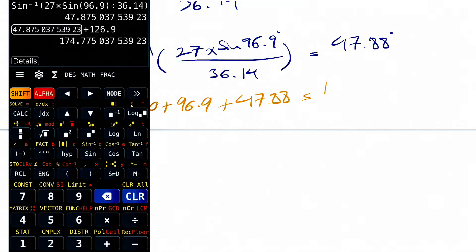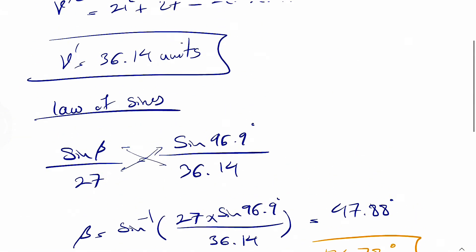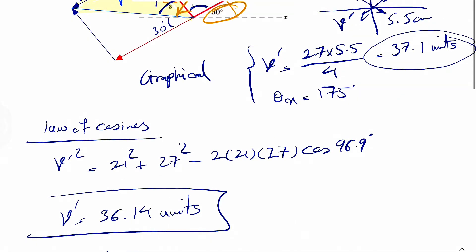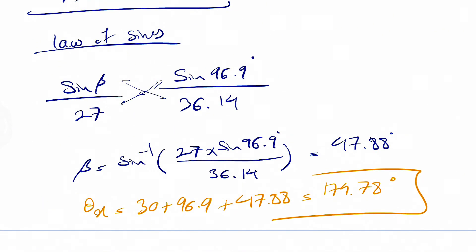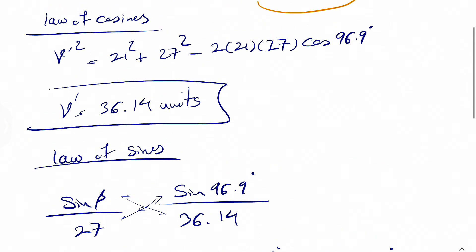So plus basically 126.9. And this is going to give us 174.78 degrees, which is pretty close to the angle that we found using graphical method, we found 175. So compared to 174.8, close enough.